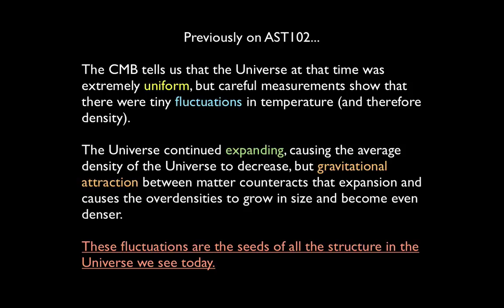Observations of the cosmic microwave background, or CMB for short, tell us that the Universe at that time was extremely uniform. But careful measurements show there were tiny fluctuations in temperature and therefore density — only one part in 100,000. The Universe has continued expanding, decreasing average density, but gravitational attraction counteracts that expansion, causing over-densities to grow even denser while under-densities become less dense. These fluctuations are the seeds of all the structure in the Universe we see today.